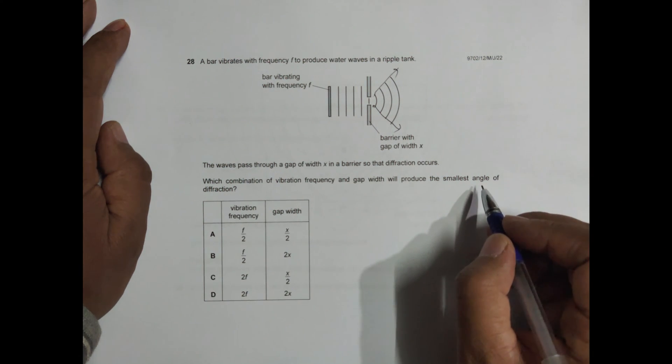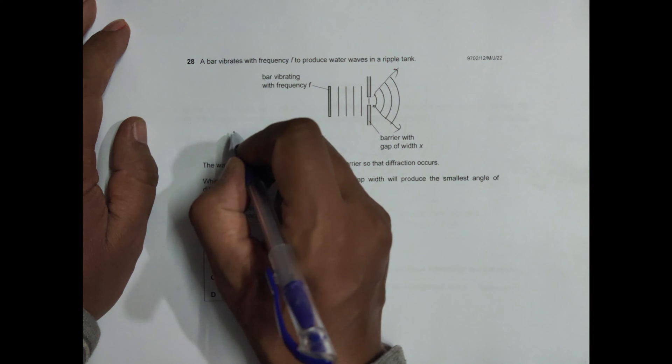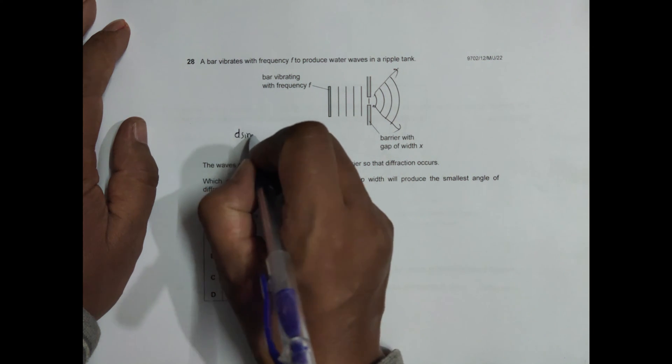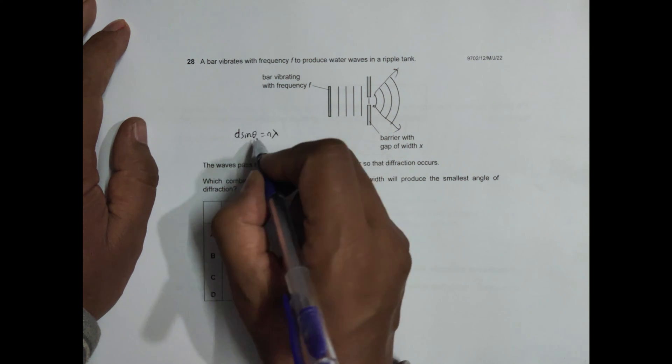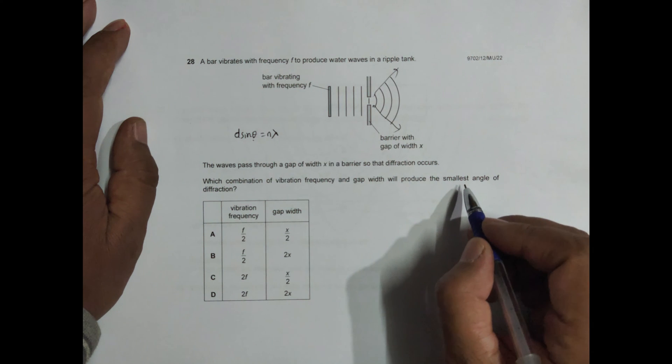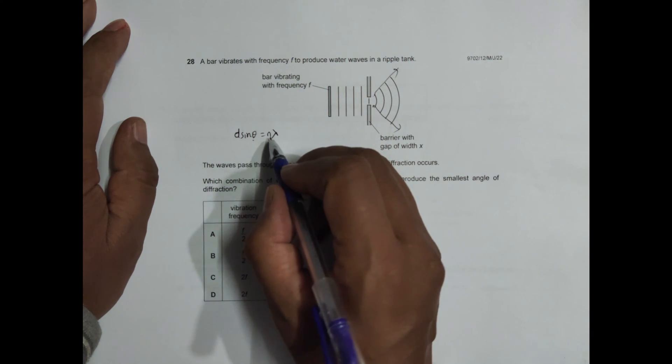The angle of diffraction is related to various other quantities like this. It is d sine theta equals n lambda. Theta is the angle, n is the order of diffraction (first order, second order, zero order), lambda is the wavelength.